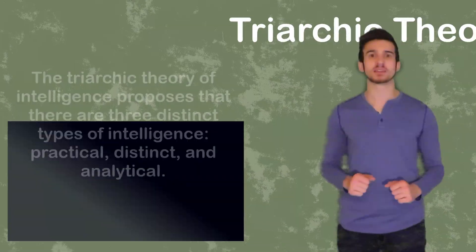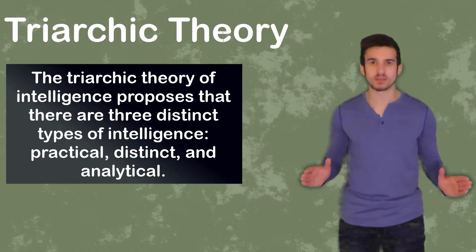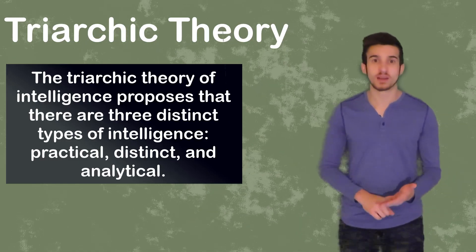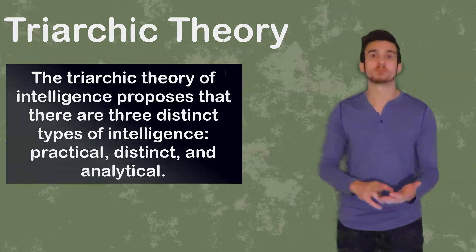Robert Sternberg is going to agree with Gardner on the basis that intelligence is more than just what can be reflected in a conventional IQ test. However, he disagreed with Gardner's notion of multiple independent intelligences. Sternberg is going to propose the Triarchic Theory of Intelligence, which states that there are three distinct forms of intelligence. We are going to have analytical intelligence, creative intelligence, and practical intelligence, or street smarts.